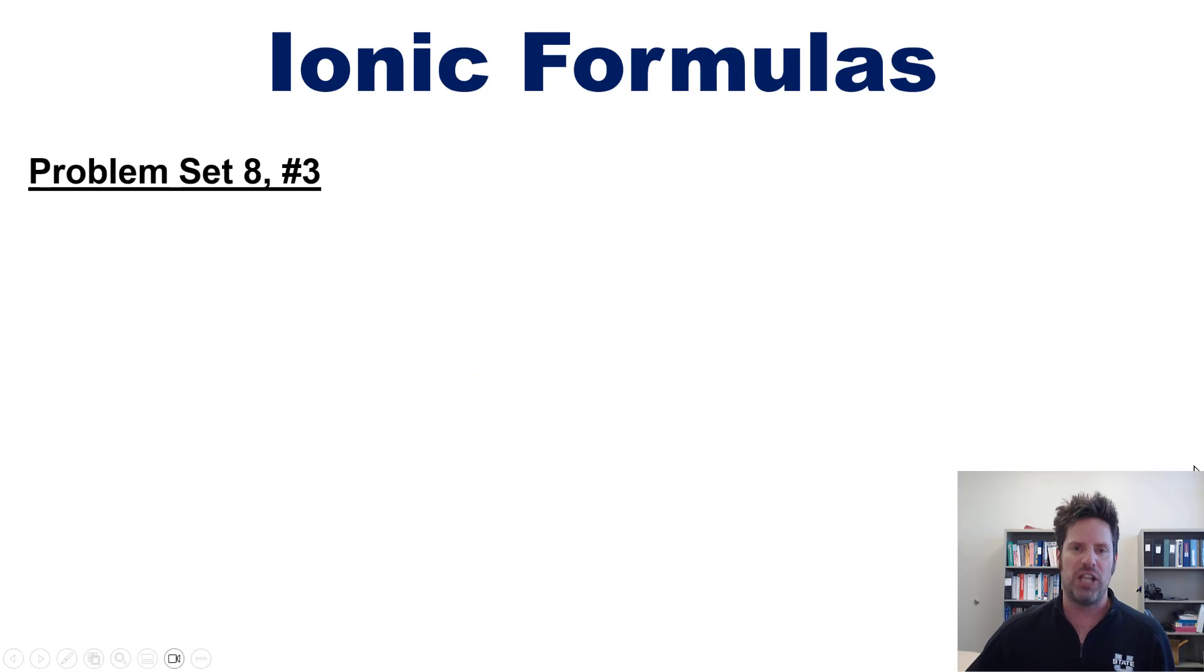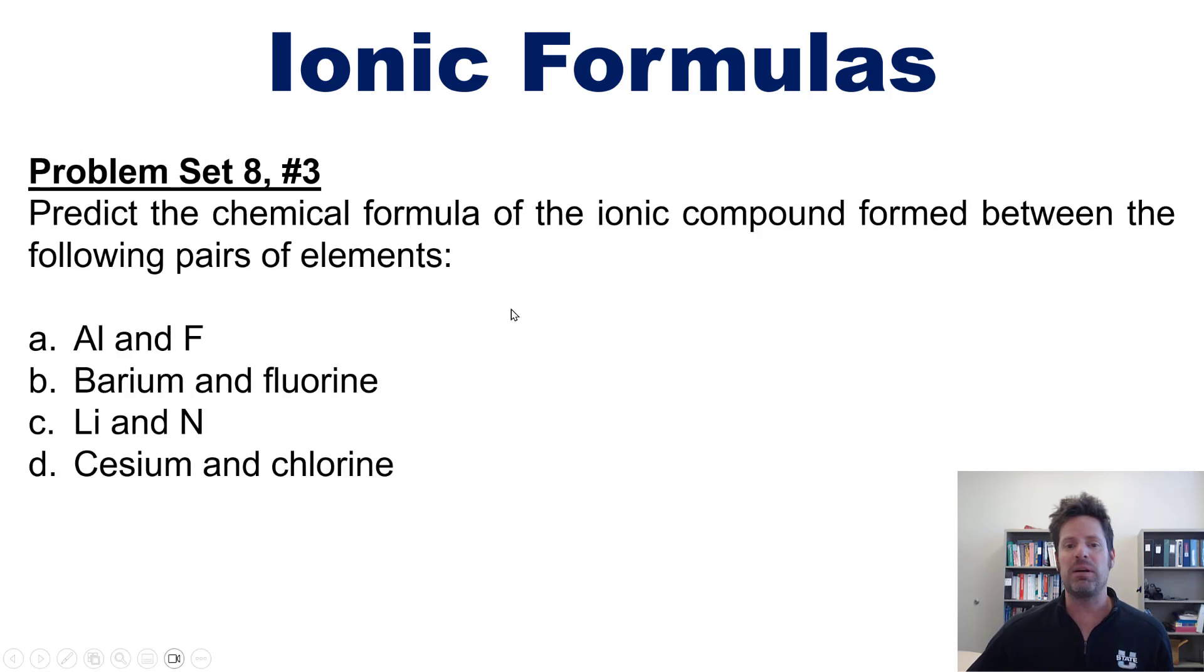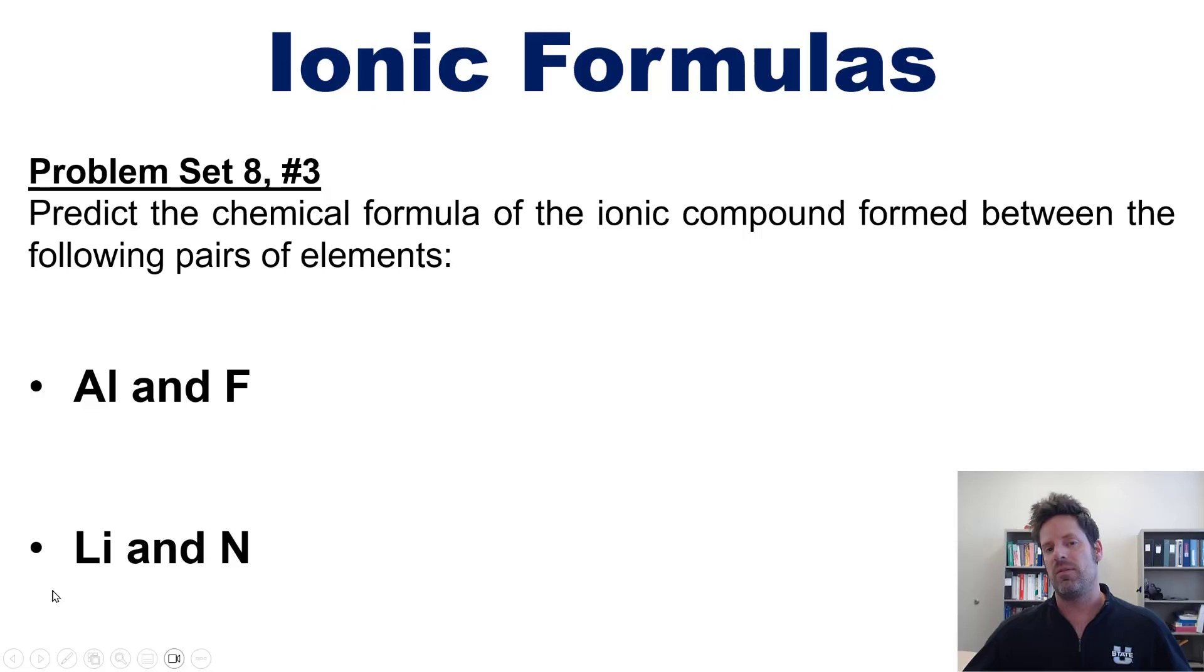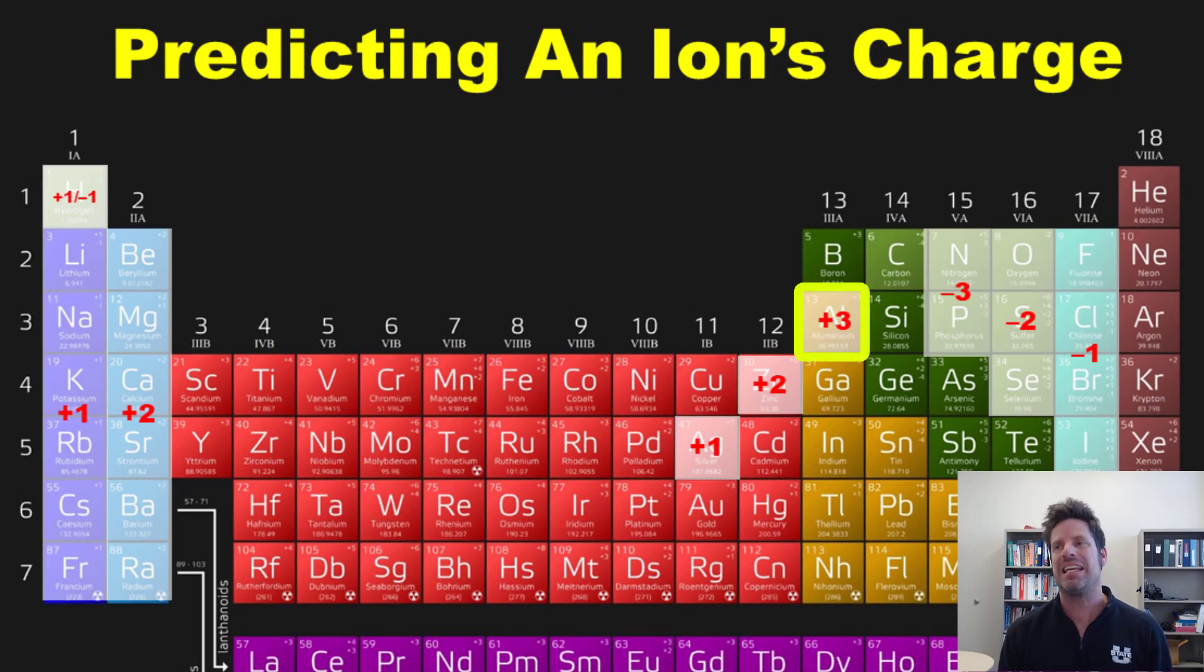That takes us then to a beautiful problem from our chapter 8 set: predict the chemical formulas of the ionic compounds formed between the following pairs of elements. Now you're welcome to pause and try these on your own and then hit play and I'll do two of these examples with you. The rest I'll leave you to do on your own. Let's begin then with aluminum and fluorine. As you can see, based on the fact that aluminum is in column three of the periodic table, it will have a +3 charge. Fluorine in contrast is all the way on the right in column 7A of the periodic table, so it's going to have a -1 charge.